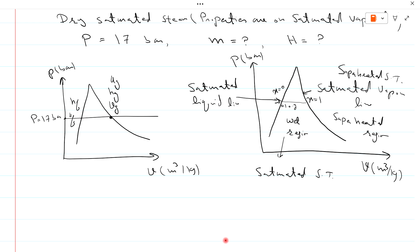And in this wet region then we use formulas to find specific volume v is equal to x times vg minus vf. And u is equal to uf plus x times ug.